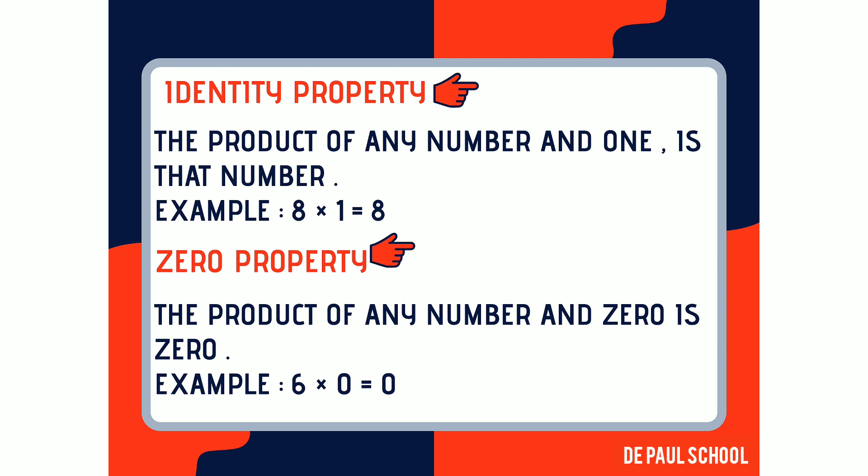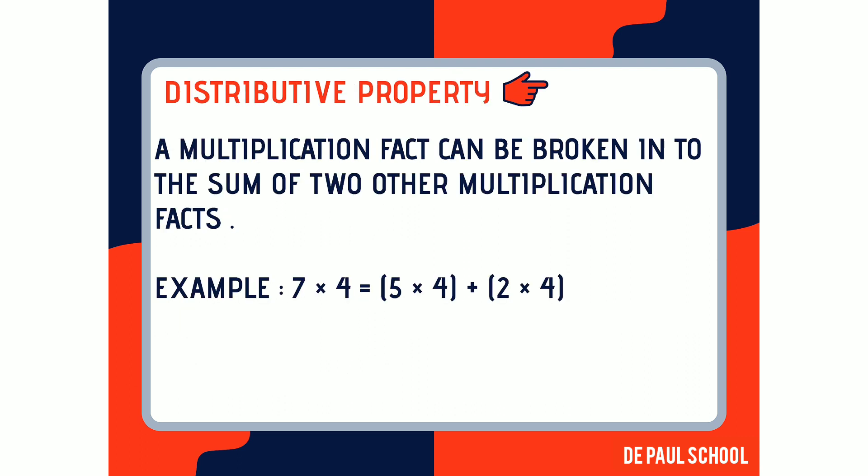The fourth property is the zero property. The product of any number and zero is always zero. For example, 6 multiplied by 0 is equal to zero. This means that when any number — no matter what number it is — is multiplied by zero, the answer will always be zero.